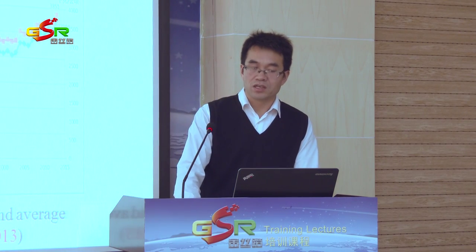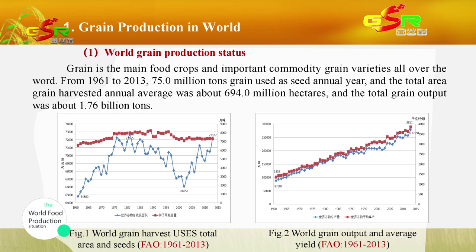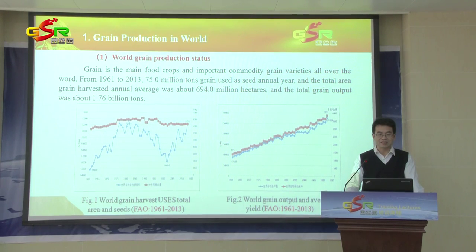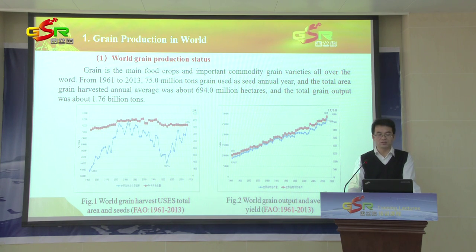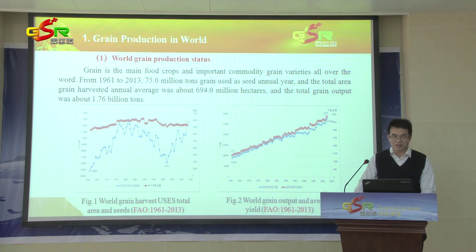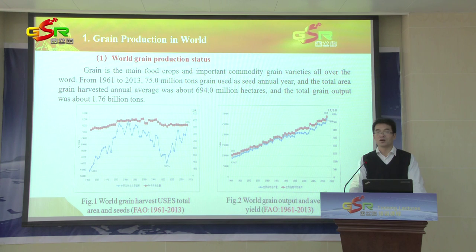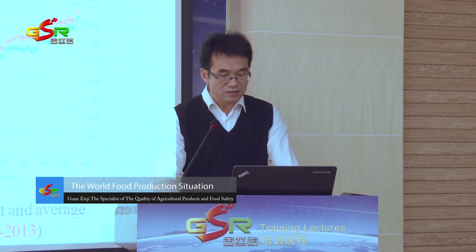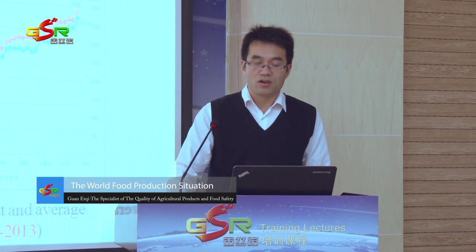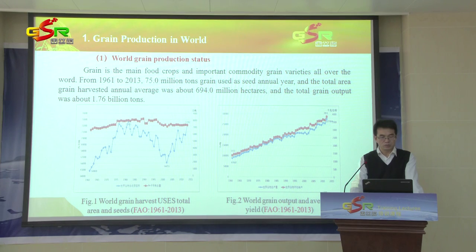First, we will talk about green production in the world. As we know, grain is the main food crop and important commodity variety all over the world. From 1961 to 2013, 75 million tons of grain yield was used as seed annually, and the total average harvest area was about 694 million hectares, with total grain output of about 1.76 billion tons, according to FAO data.